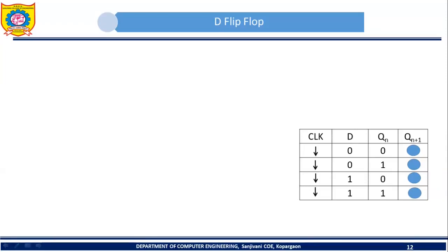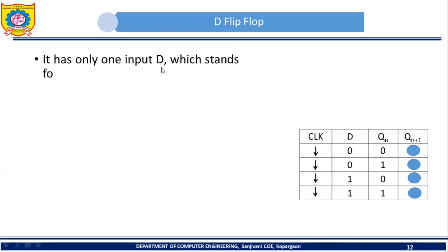Now let's discuss the next type of flip-flop: the D flip-flop. This D flip-flop has only one input, labeled as D, which stands for data. We have seen that in the case of SR flip-flop and JK flip-flop there were two inputs, but in the case of D flip-flop you will find only one input.